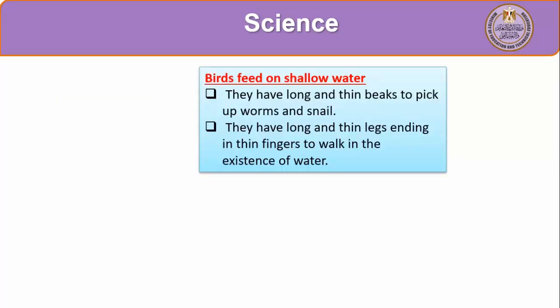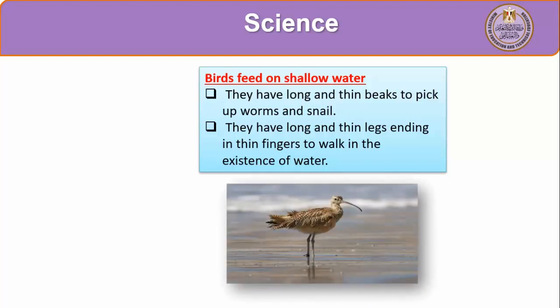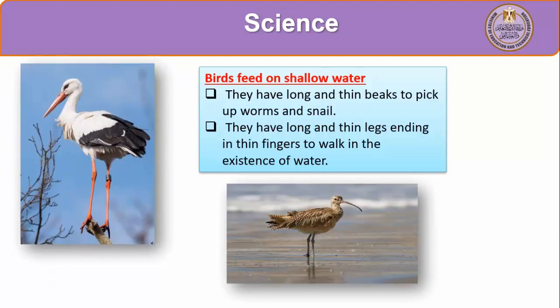The second type is birds that live in shallow water. If we look at these birds, you will notice they have long and thin beaks to allow them to pick up worms and snails from the water. Their legs are also very long and thin to allow them to walk easily in shallow water.